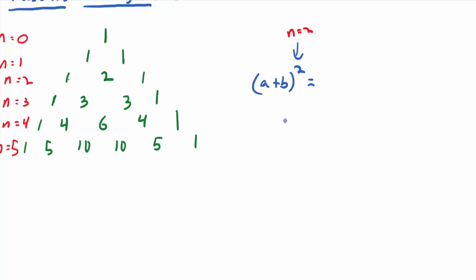What's the formula for that? a² plus 2ab plus b². And look at the coefficients, one, two, one, which exactly match the numbers in what we call row two of Pascal's triangle.